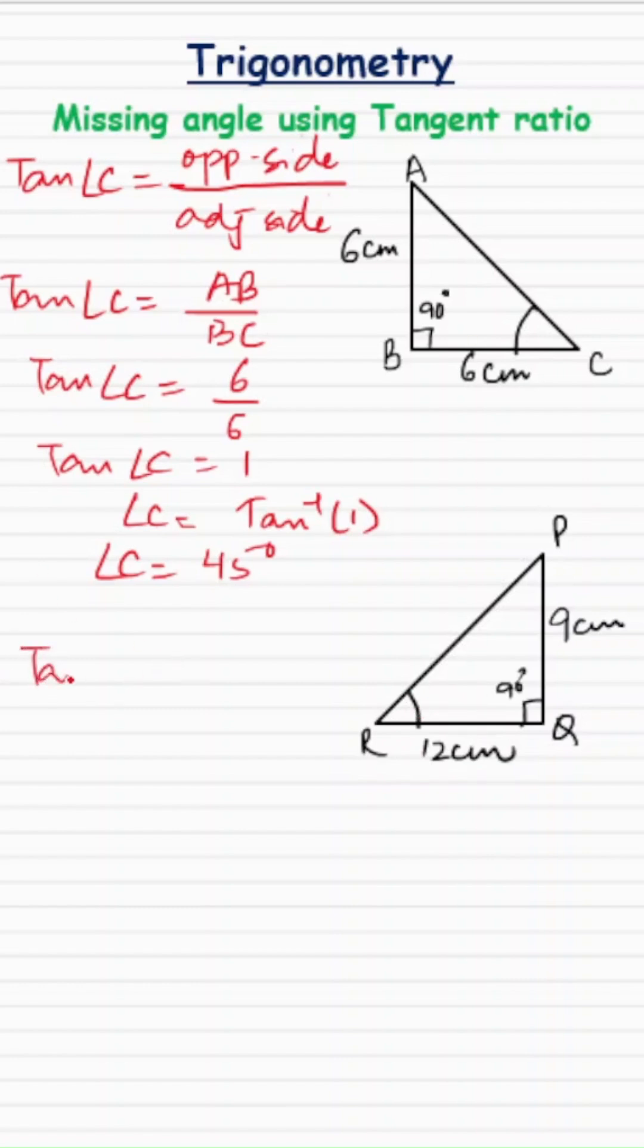So tan of angle R is equal to the opposite side, which for angle R is PQ, over the adjacent side QR. So tan R is the ratio of PQ over QR. Tan R equals 9 over 12. So angle R is equal to tan inverse of 9 over 12.